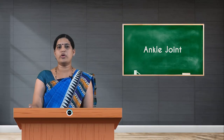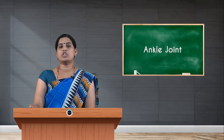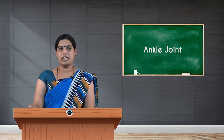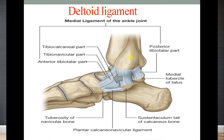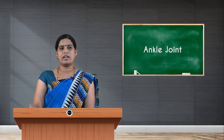The medial ligament of the ankle joint is also called the deltoid ligament. Its apex is attached to the medial malleolus of the tibia, and its base spreads to the respective tarsal bones. From the medial malleolus going to the calcaneum is the tibiocalcaneal part; going to the navicular bone is the tibionavicular part. The anterior tibiotalar part is the deep slip, and the posterior tibiotalar part is the superficial slip of the deltoid ligament.